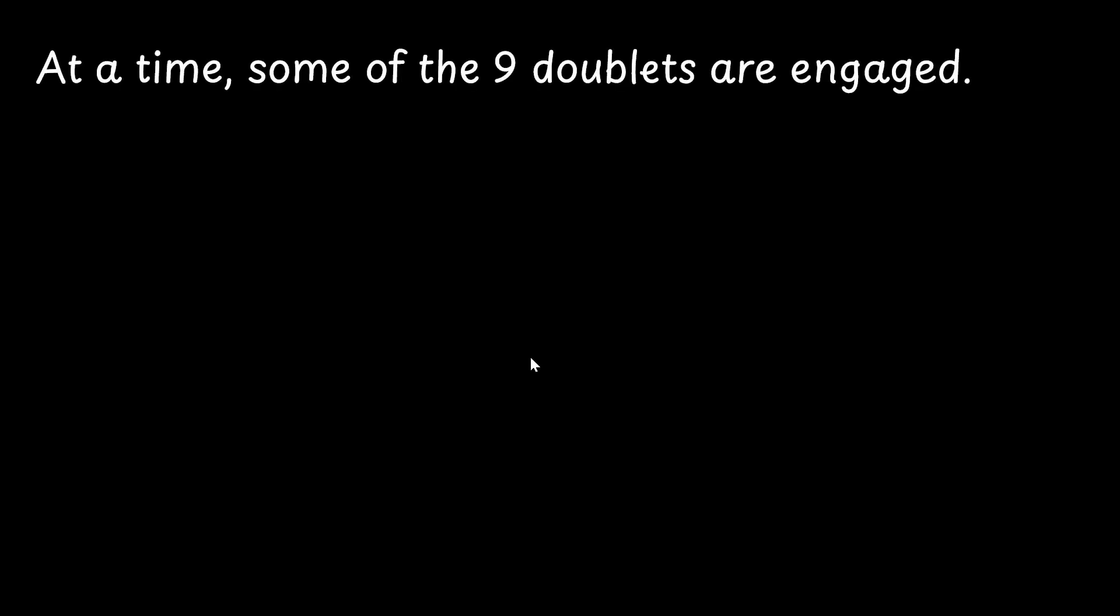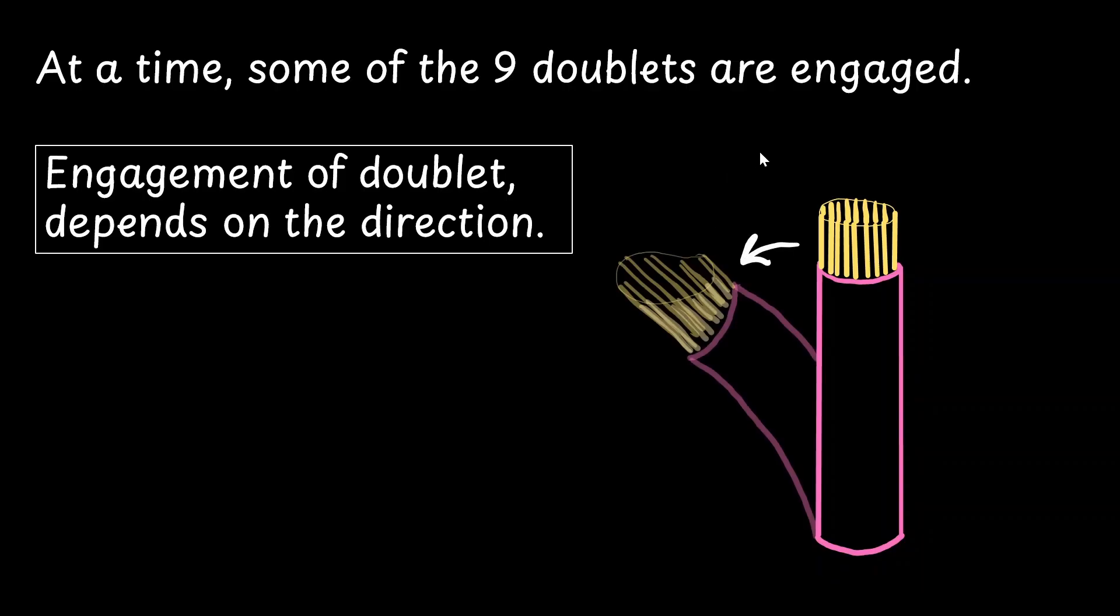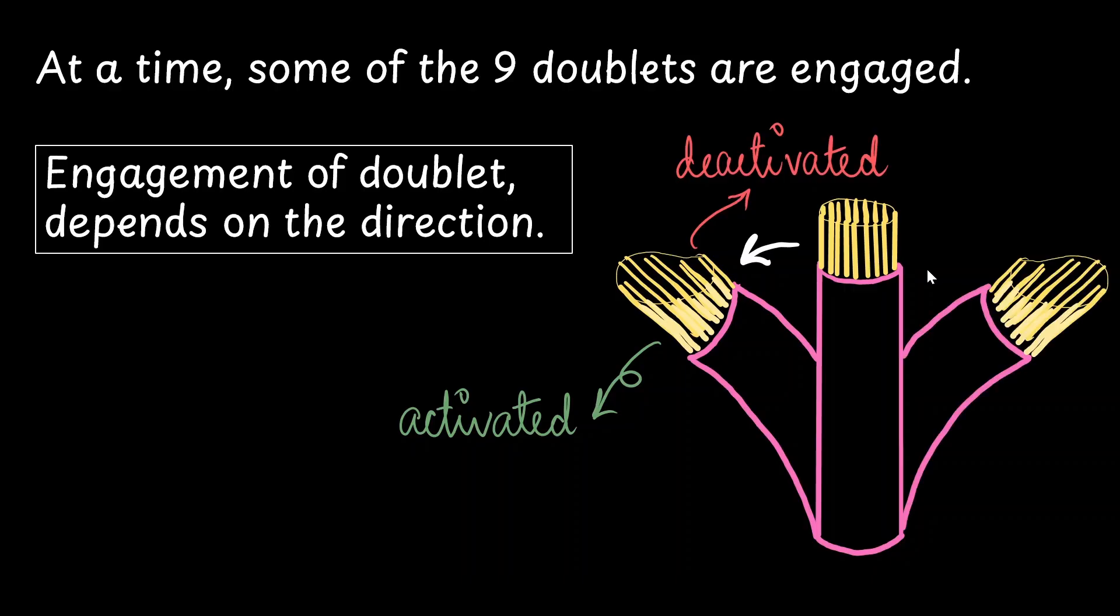But the doublets are not all engaged simultaneously. And depending upon the direction of the bend, a section of the axoneme is engaged while the rest are free. So in our original axoneme, the correct way to represent the bending movement would be like this. So let's say they want to move towards the left, you would notice that a section of the axoneme is taller. That is because they have been activated and the others remain the same height because they are deactivated. The same thing happens when it has to bend in the opposite direction.